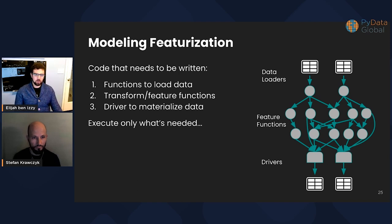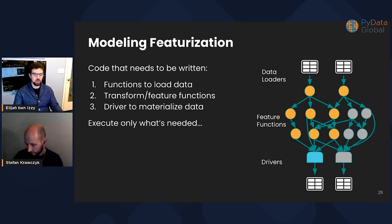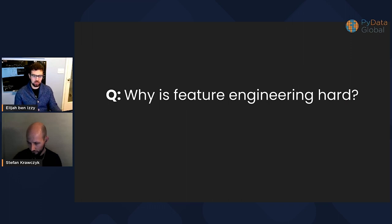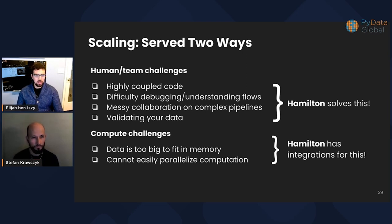How do you model featurization in Hamilton? You need two function files and the driver: functions to load the data from your data warehouse, SQL, or wherever; functions to transform your data from raw form into something useful for your model; and a driver to materialize it. Hamilton is smart about executing only the pieces that are needed. There are two ways we think about scaling — a novel approach I'm excited to share. One is human and team challenges: scaling as the complexity of your problem changes and as the team morphs. Hamilton was built to solve this. The other is compute challenges — Hamilton can help you integrate with powerful frameworks to handle that.